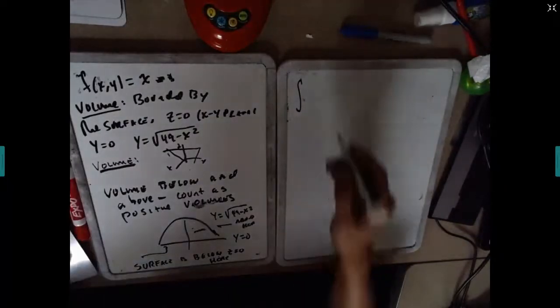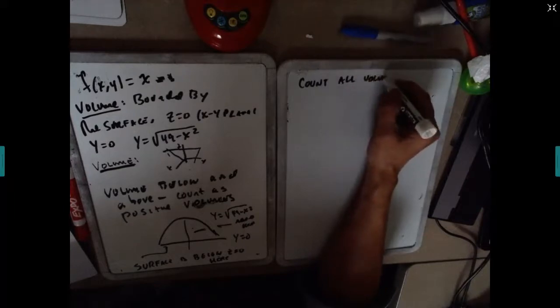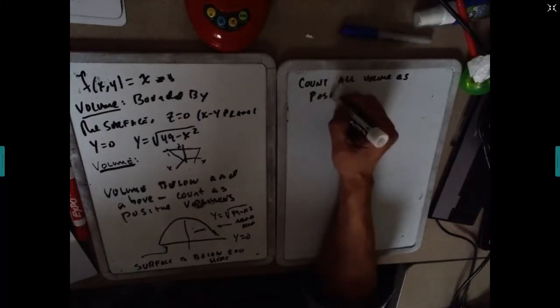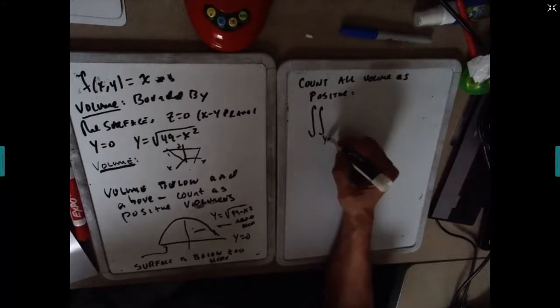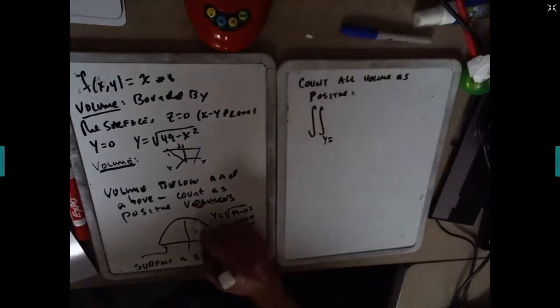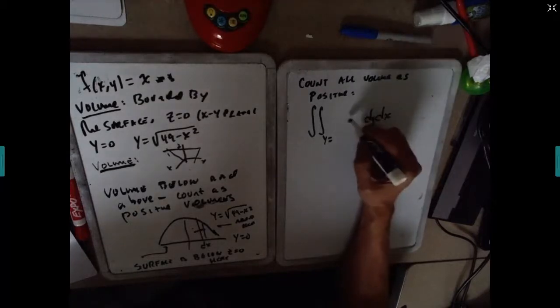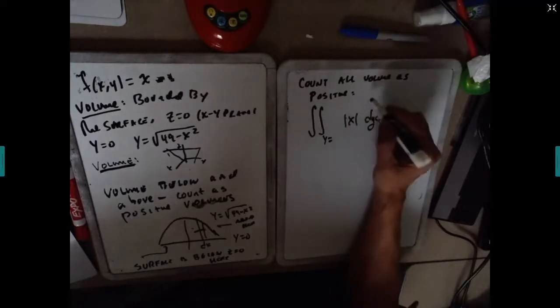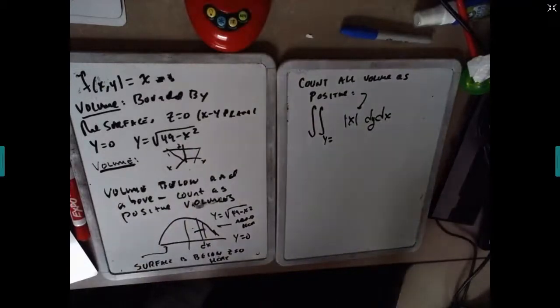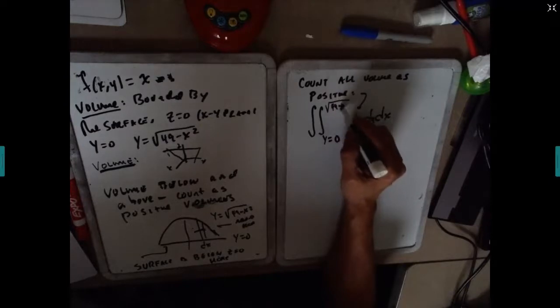So what we really are integrating, because we want to count the volume as positive - what we really are integrating over this particular region with a dx slice like this - I'm integrating the function, I'm not integrating x, I'm integrating absolute x to make this a positive function.